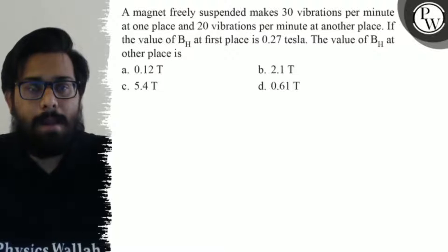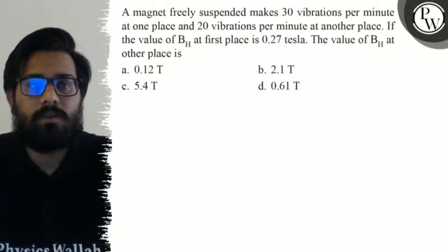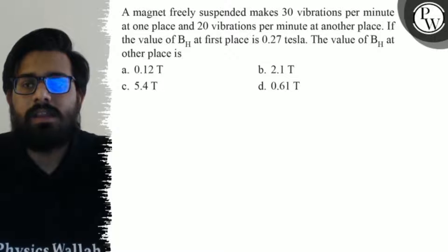Hello, let's see the question. A magnet freely suspended makes 30 vibrations per minute at one place and 20 vibrations per minute at another place. If the value of B_H at the first place is 0.27 tesla, the value...